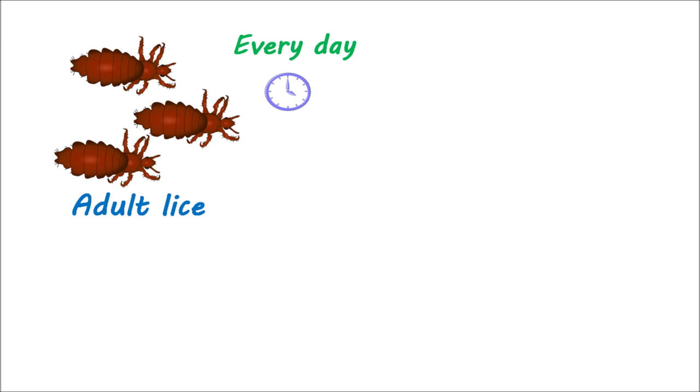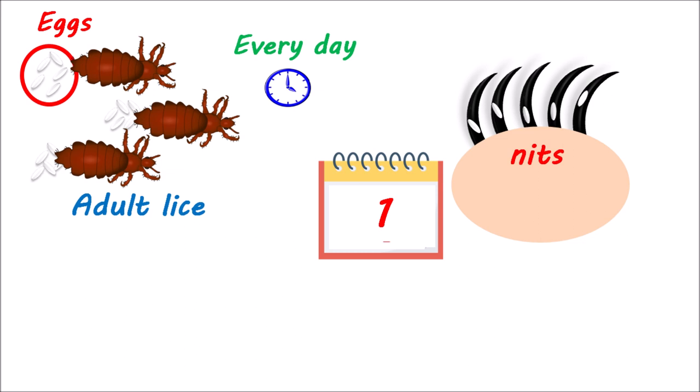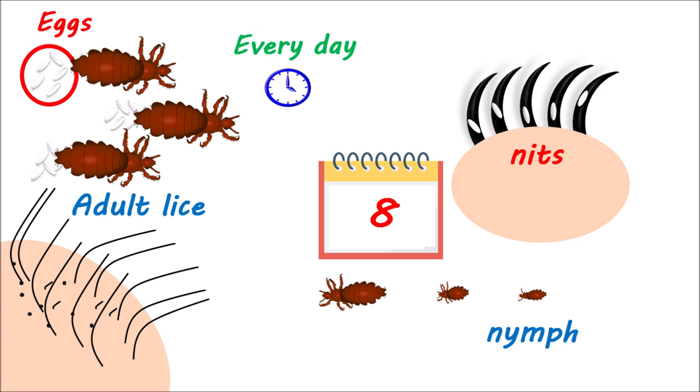An adult louse can lay around 8 to 10 eggs every day, and these eggs firmly bind to the base of the hair shaft. They are commonly known as nits. These oval-shaped nits are light brownish-white in color and easily spread into hair, especially at the back of the ear and neck. After 8 days, these nits hatch to release nymphs, whose organs are not completely developed. They take another 8 days to mature, at which point an adult louse is ready to infest the scalp of the host and suck blood, causing severe itching, scratching, and tickling that may lead to irritability and difficulty sleeping.